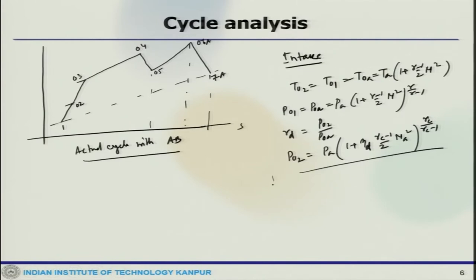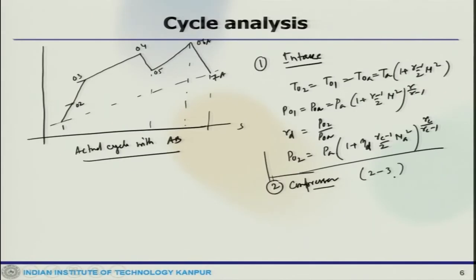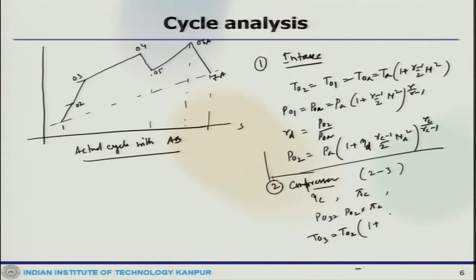Moving to the compressor (station 2 to 3): this is an irreversible adiabatic compression process. The isentropic efficiency of the compressor is η_c, and the pressure ratio is π_c. Therefore P₀₃ = P₀₂ · π_c, and T₀₃ = T₀₂ · (1 + (π_c^((γ_c−1)/γ_c) − 1) / η_c).